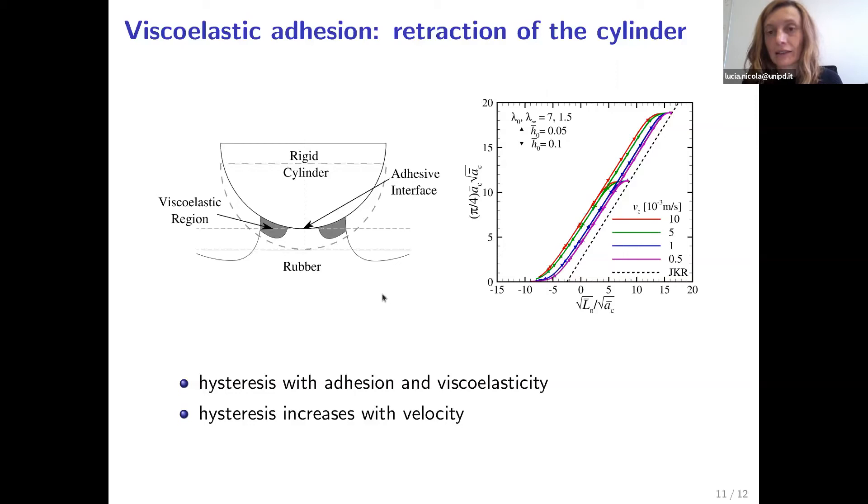Here we have put the results in terms of area-load with the normalization that allows us to plot the JKR adiabatic behavior as a straight line that you see here. So the straight dashed line is the JKR adiabatic behavior. And when we increase the retraction velocity, we see that we increase the hysteresis that there is between load and area, and we depart more and more from the adiabatic solution.